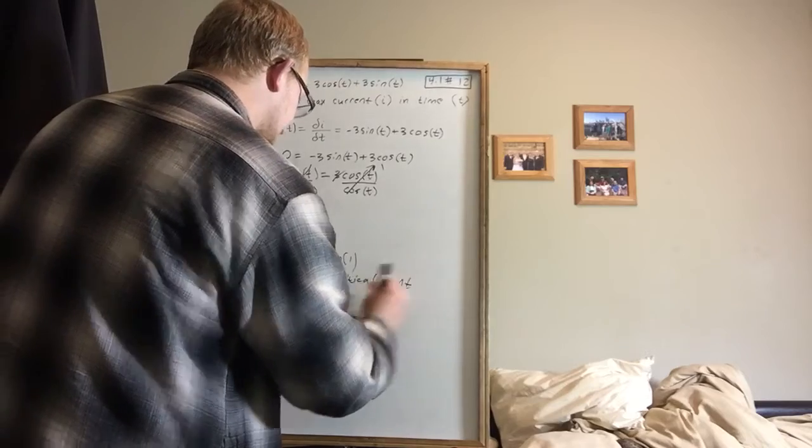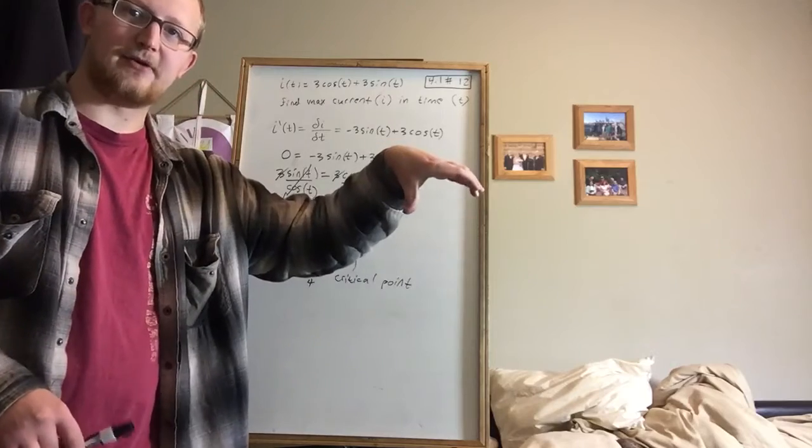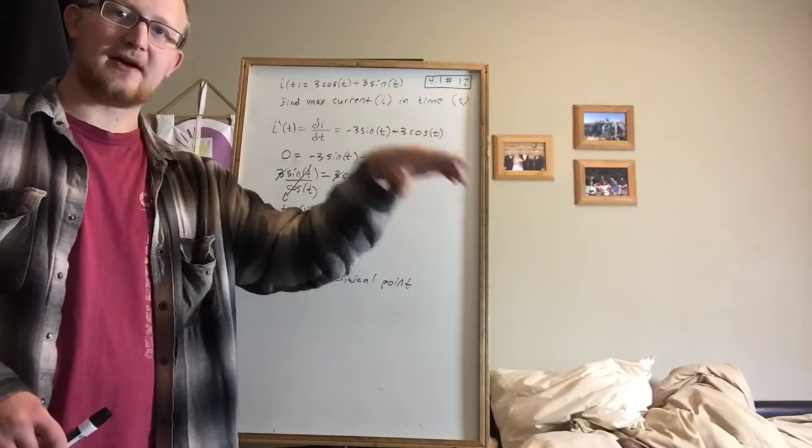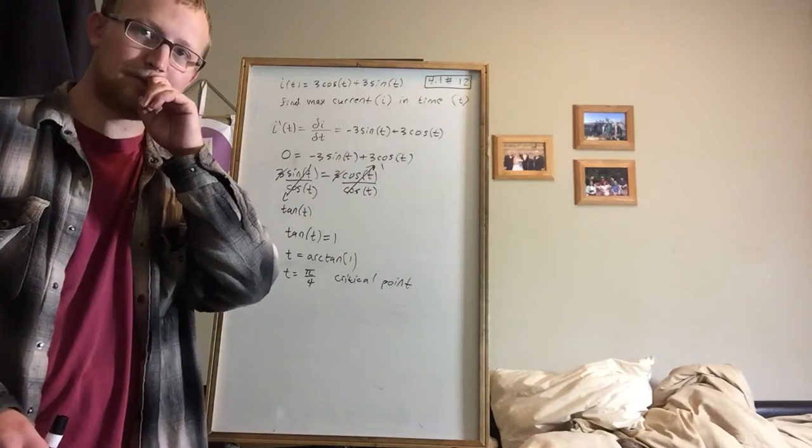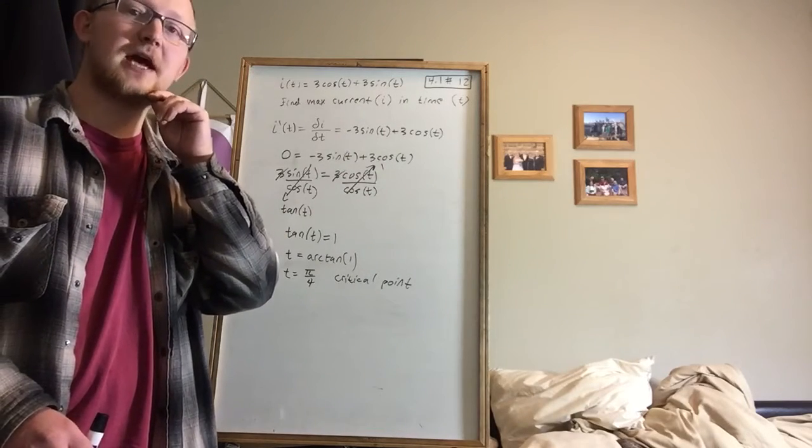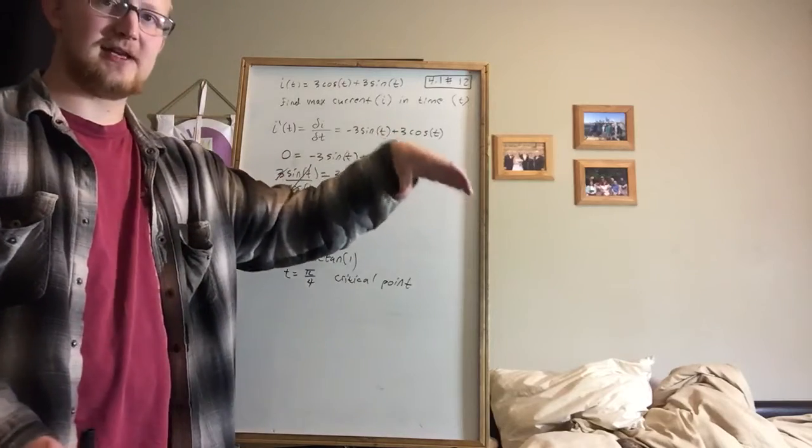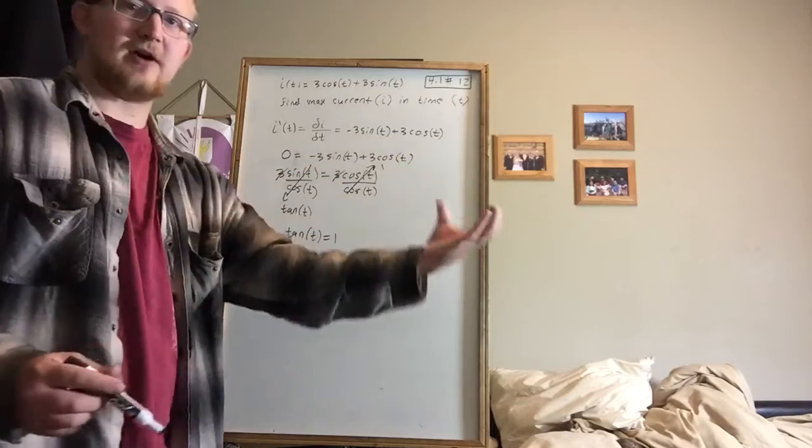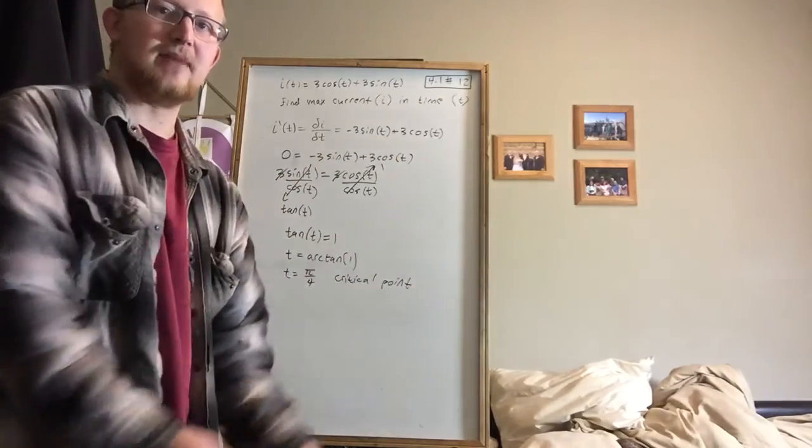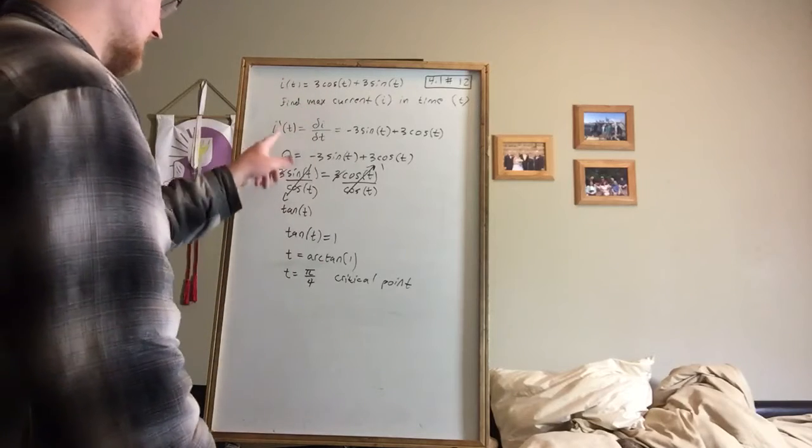And now we want to test whether it's concavity up or concavity down. If you haven't seen my video on concavity, I recommend taking a look at that one. It's called curve sketching, something like that. And remember, if we have concavity down, that means that we're looking at a maximum. If we have concavity up, that means we're looking at a minimum point when we plug in the value into the second derivative.